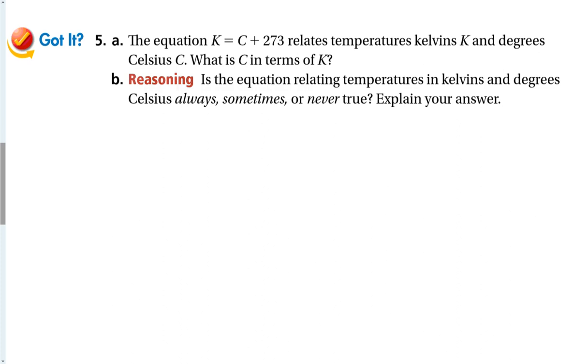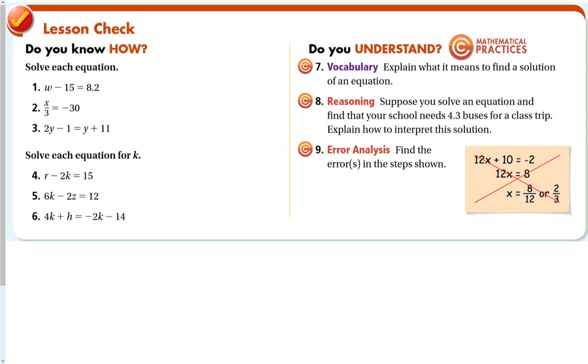Got It problem. The equation K equals C plus 273 relates temperatures to Kelvins and degrees Celsius. So if I want C by itself, this one's pretty easy. C would be equal to K minus 273. You just subtract 273 from both sides. Is this always, sometimes, or never true? Well, it's sometimes true. Because if you plug in a number for this, you're going to get only one answer for C. So pick a number in your head for K, 100. 100 minus 273 gives you negative 173. Kelvin 273, 273 minus 273, that's zero. So you're only getting, for every input, you're only getting one output. You're getting a lot of different answers depending on what your input is, but you're only going to get ever one answer. And that is something called a function that we'll talk about in chapter two.